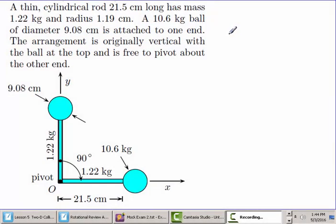This is Dr. Holt. This video is on rotational energy. Here I have a thin cylindrical rod that is 21.5 centimeters long. And to define the length, I'm only talking from here up to here is 21.5 as defined by the dimension here. It has a mass of 1.22 kilograms. It has a radius of 1.19 centimeters, which only helps define that we're dealing with a thin cylindrical type of rod.